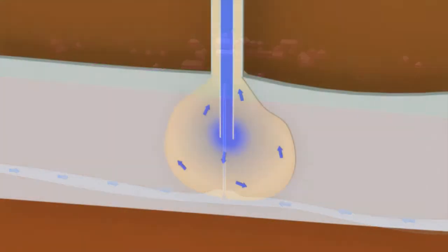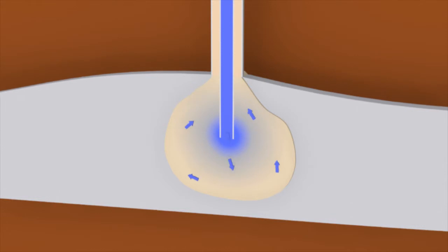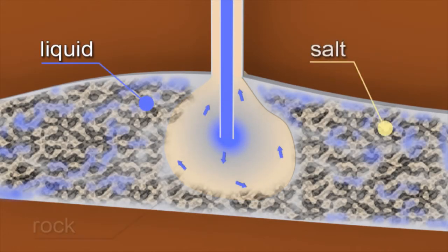By extracting salt, volume is taken from the soil. But that doesn't mean a hollow space is created, because liquid, undissolved salt and rock are left behind.